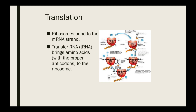Translation is when the ribosomes bond to the messenger RNA strand, and then transfer RNA (tRNA) brings amino acids with the proper anticodons to the ribosome. That allows the process to carry on — essentially, we're starting to get creation of specific strands of different amino acids, which in turn is a protein.